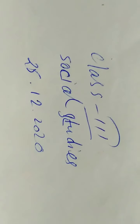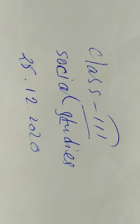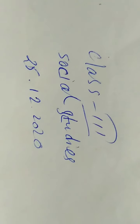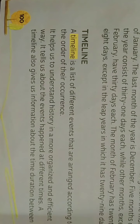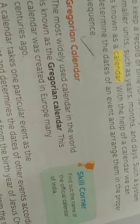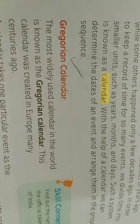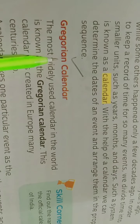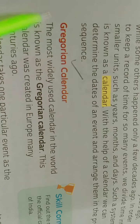Good morning, my dear children of class 3. It's your social studies classwork. Today's date is 25th of December 2020. So let's start our today's classwork. Page number 100 in your social studies book. Page number 100 — did you start? From Gregorian calendar.